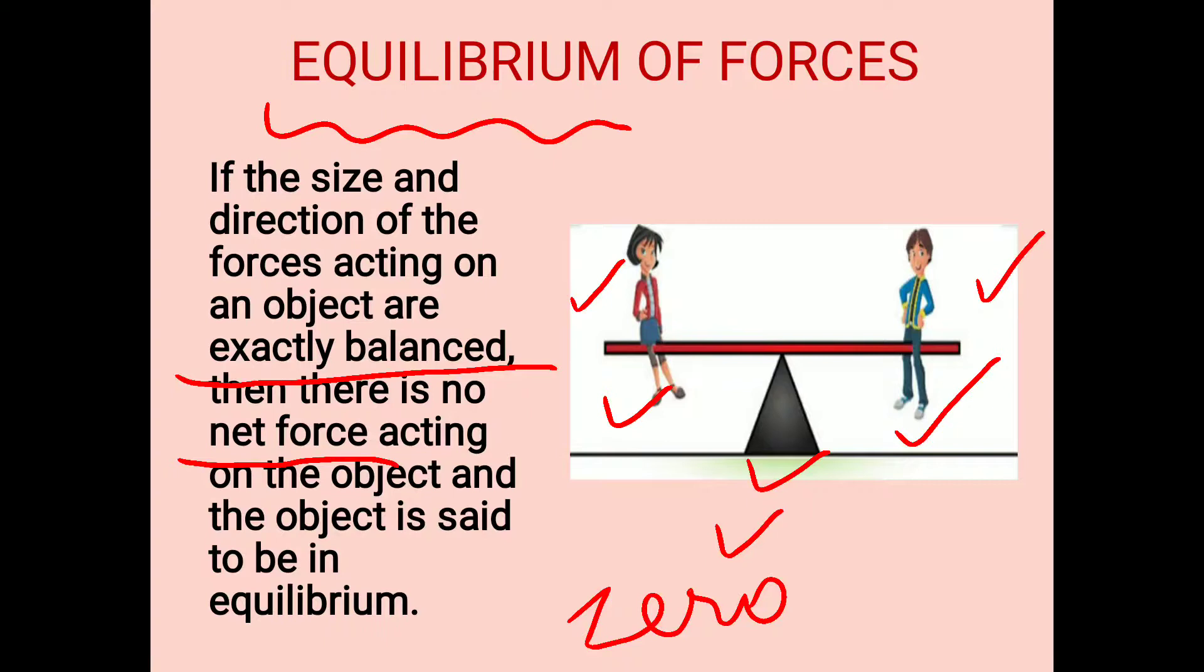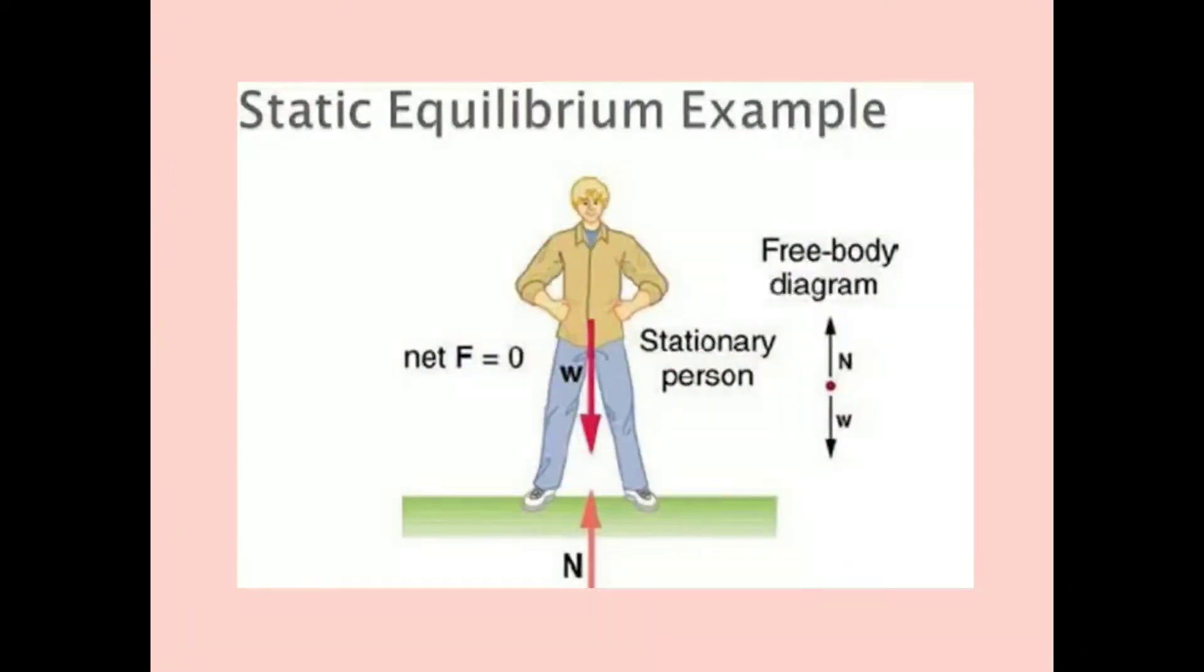If any force acts, it causes an effect. But if the net effect is zero, then the body is in equilibrium. Another example is static equilibrium, where the body is at rest. This shows the weight of the body W acting downward and normal reaction of the surface acting upward on the body. The free body diagram shows the upward force and downward force, so the net force is zero.